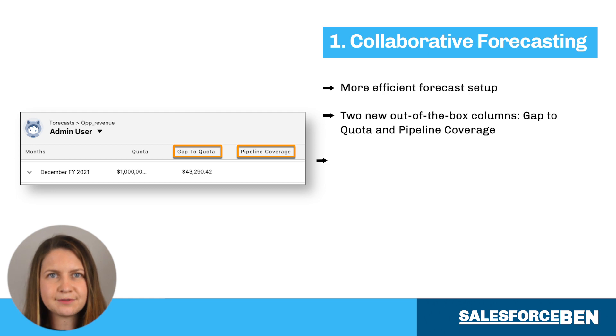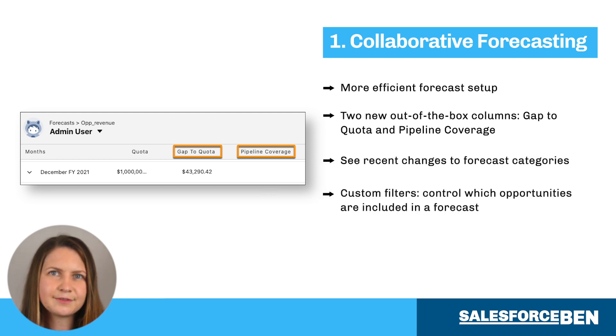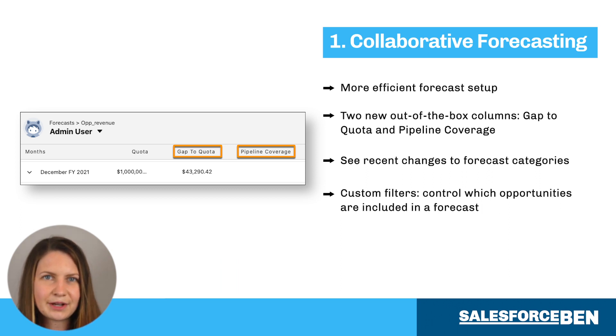You can also see recent forecast changes to categories, and custom filters enable you to control which opportunities are included in a forecast based on their record type.